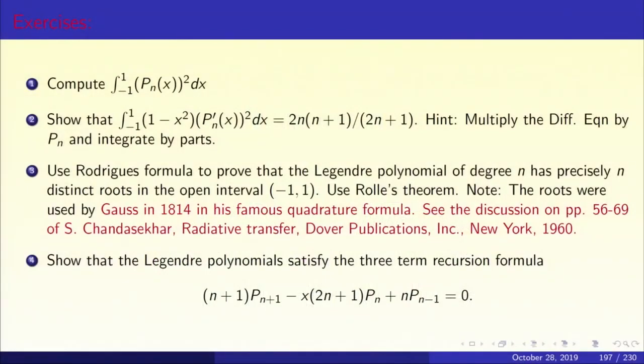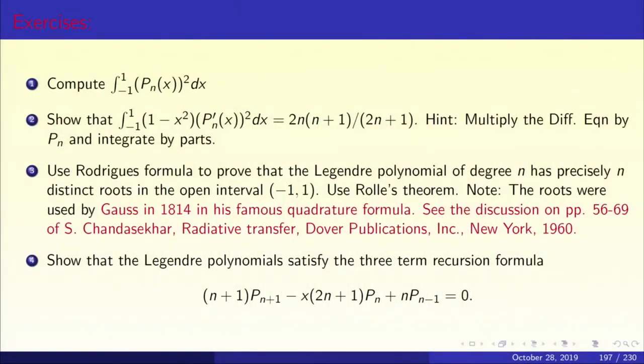Last time we derived the Rodrigues' formula. This slide lists four exercises on the Legendre polynomial. The Legendre polynomial P_n(x) has exactly n distinct roots in the interval (-1, 1). These roots were used by Gauss in 1814 for developing his quadrature formula, today known as Gaussian quadrature, which gives the best possible error estimate among all quadrature formulas — the Gaussian quadrature has the least error. We shall now give a detailed proof that the nth Legendre polynomial has n distinct roots in the open interval (-1, 1).